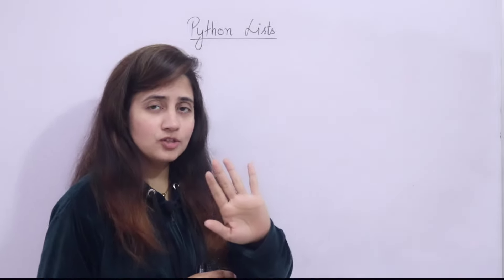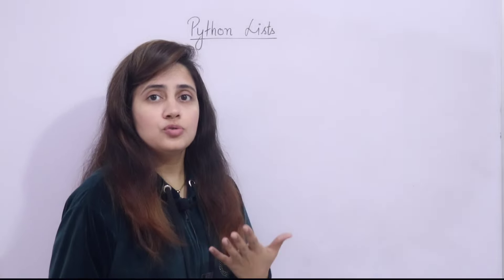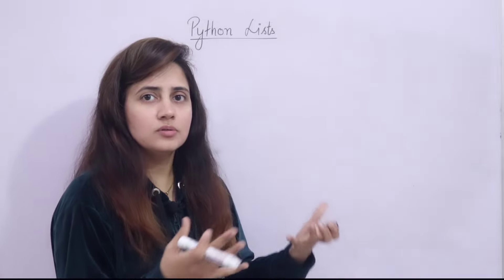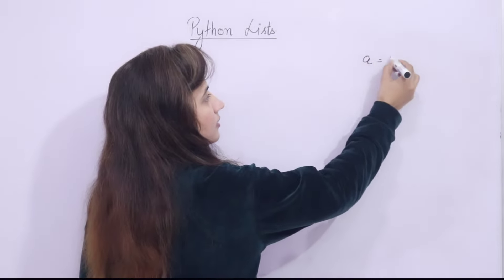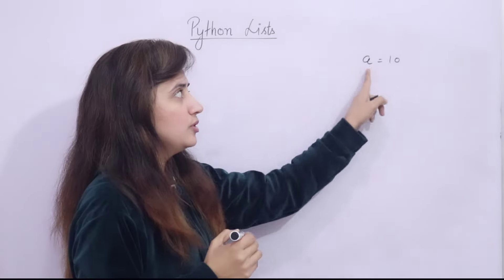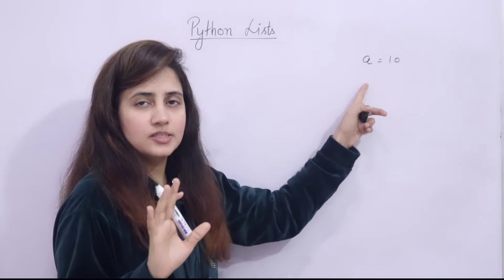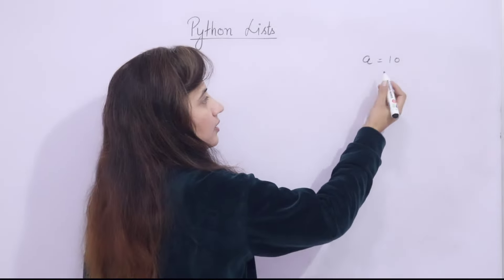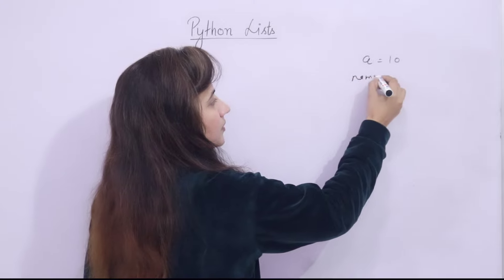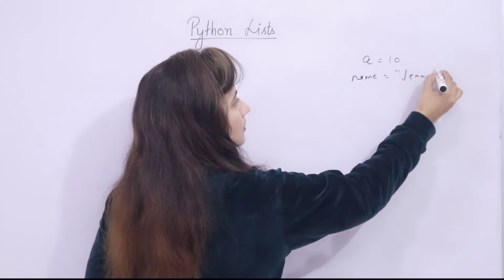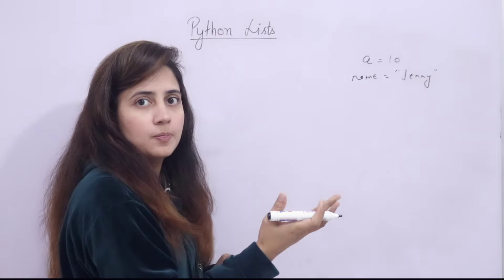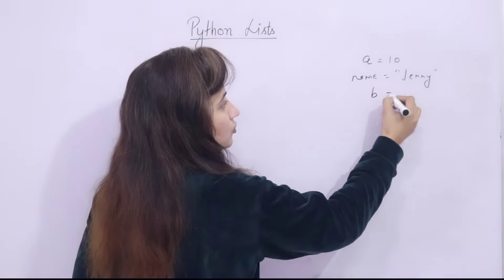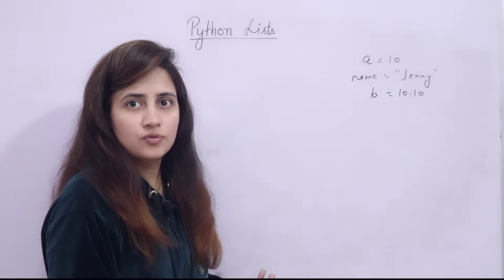First, let me ask one question. If I want to store one integer, suppose I want to store 10, I simply create a variable like a = 10. So 10 would be stored in variable a. Similarly, if I want to store 'Jenny', I take another variable like name = 'Jenny'. This is a string, and a is an integer. Same boolean type we can store, same float type like b = 10.10.